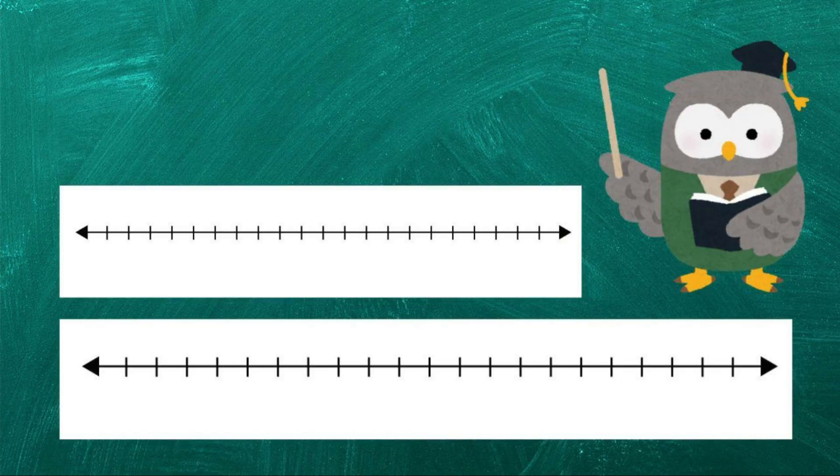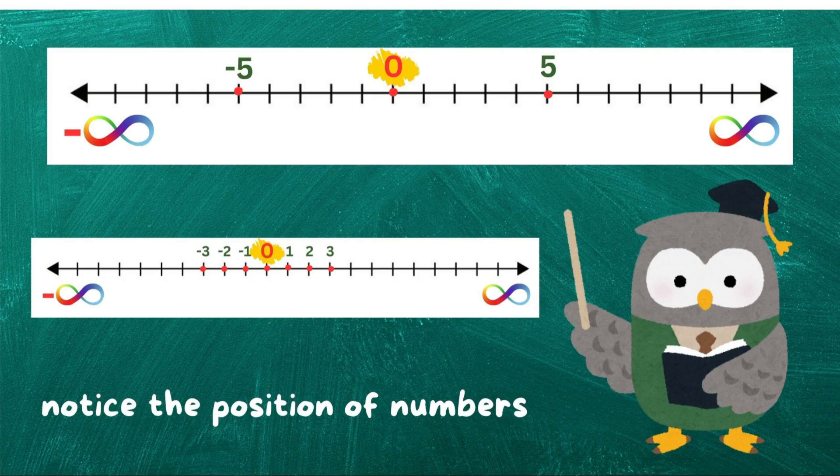Let's illustrate this with a number line. Zero sits right in the middle. On the right side of zero, we have positive numbers: 1, 2, 3, and so on. On the left side of zero, we have negative numbers: minus 1, minus 2, minus 3, and so on. Zero is the point where positive and negative numbers meet. It's the balance point, the center of our number system.